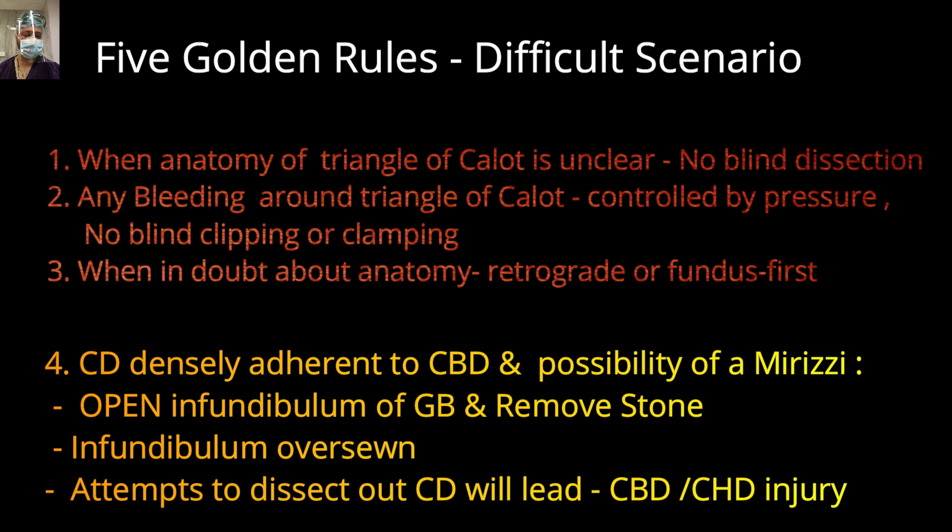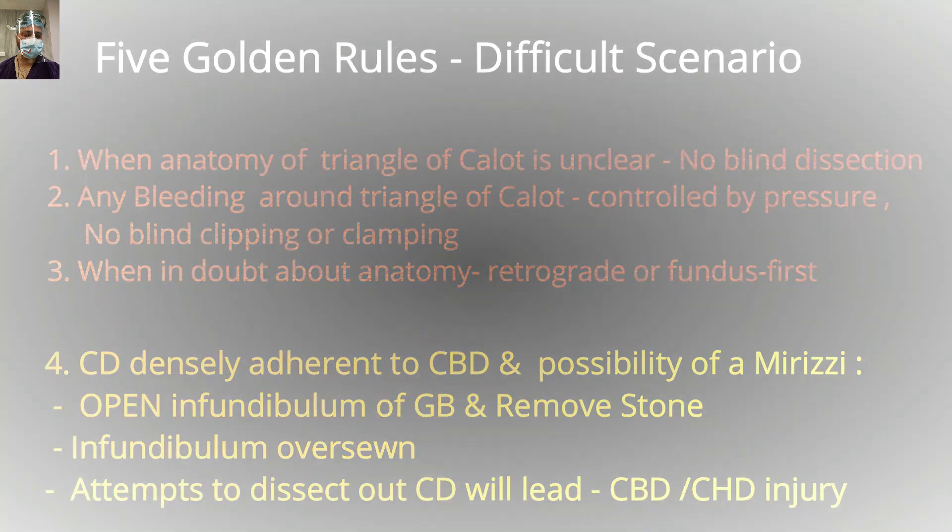Rule four: if the cystic duct is densely adherent to the CBD or there is a possibility of injury, open the infundibulum of the gallbladder, remove the stones, and oversew the infundibulum. Any attempt to dissect the cystic duct from the CBD will lead to a high biliary injury — E3 type — opening the hilum of right and left ducts, leading to serious consequences. Don't try to dissect it violently; just open the infundibulum, remove the stones, and oversew.